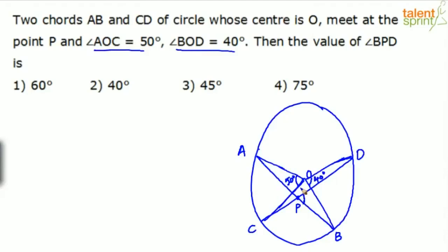Now, if I join point C and B — making a chord here — look at angle AOC. AC is the arc. The angle made by a chord at the center is twice the angle made by the same chord at any other point on the circle. So we can say angle AOC equals twice the angle ABC.